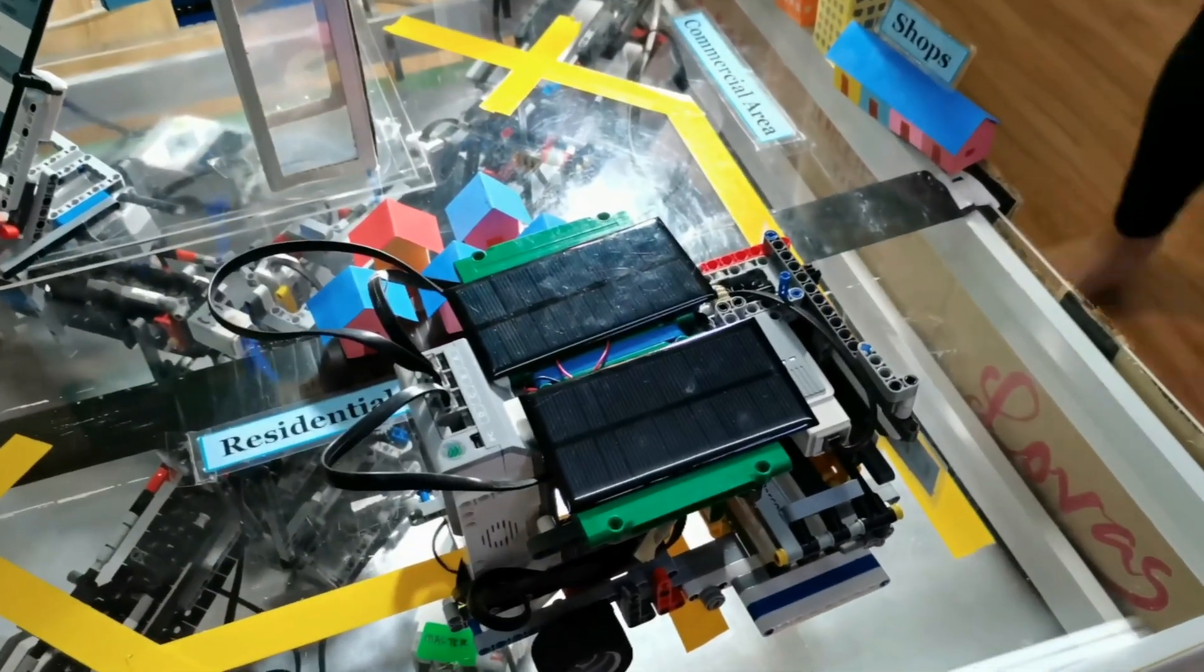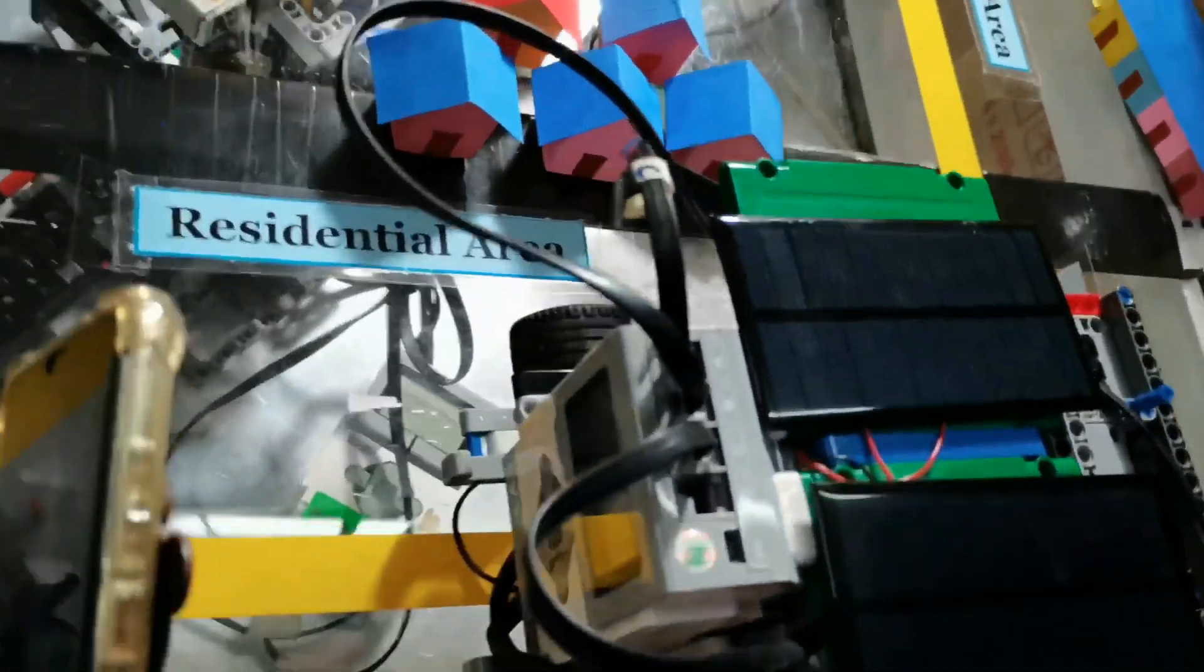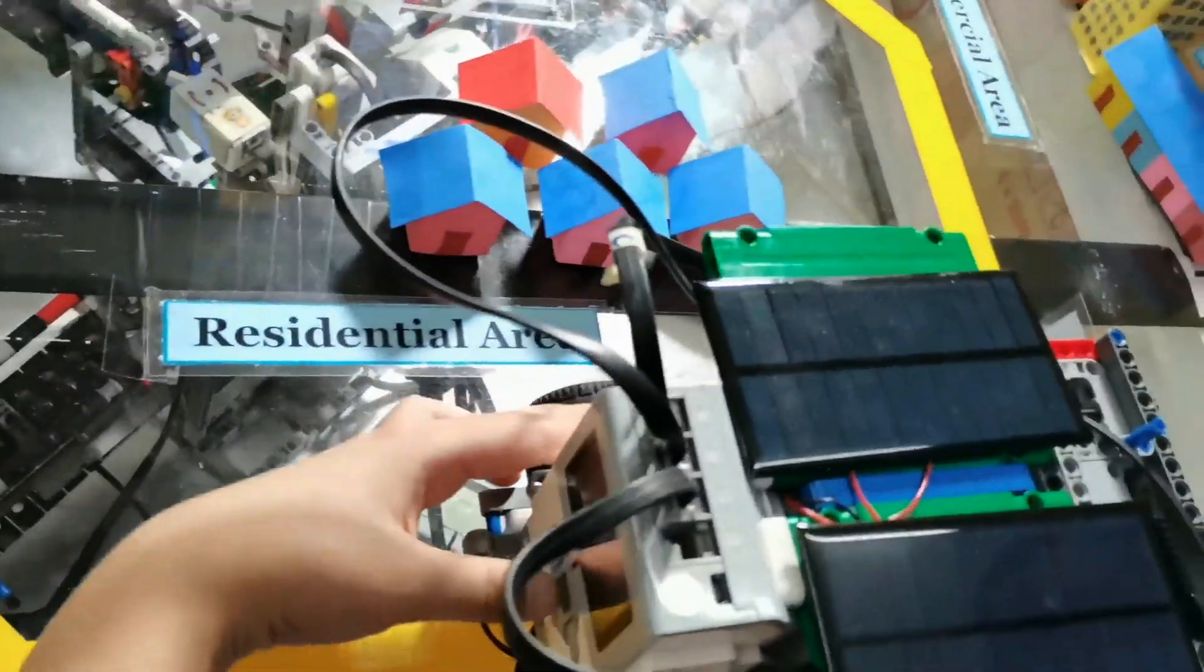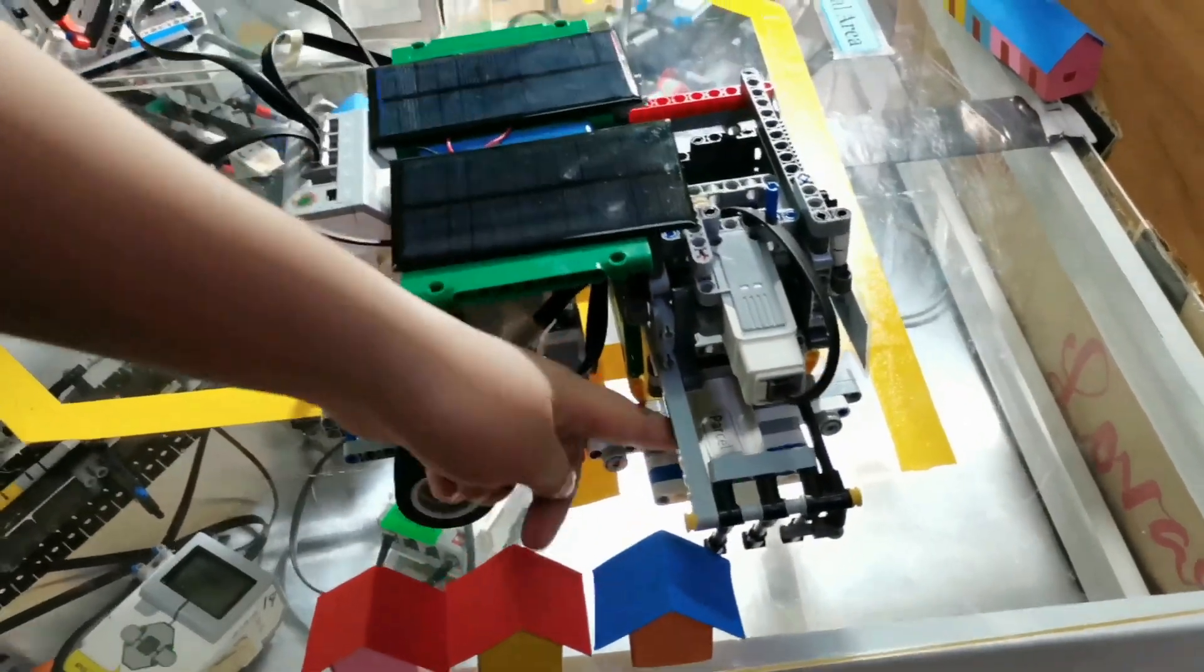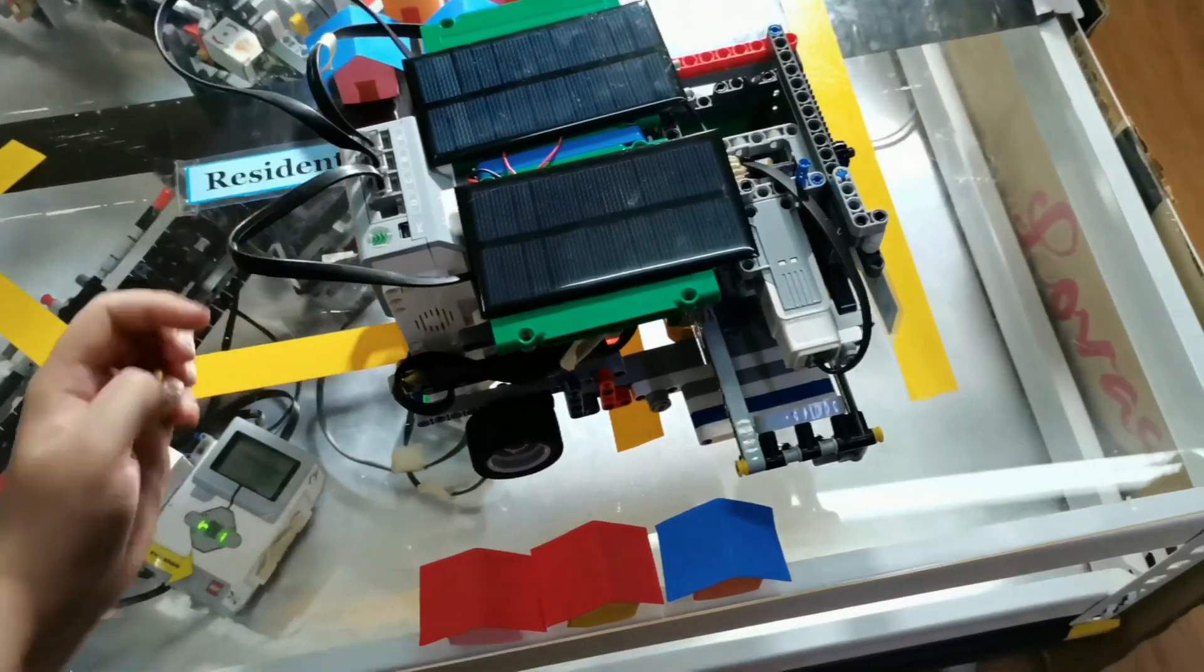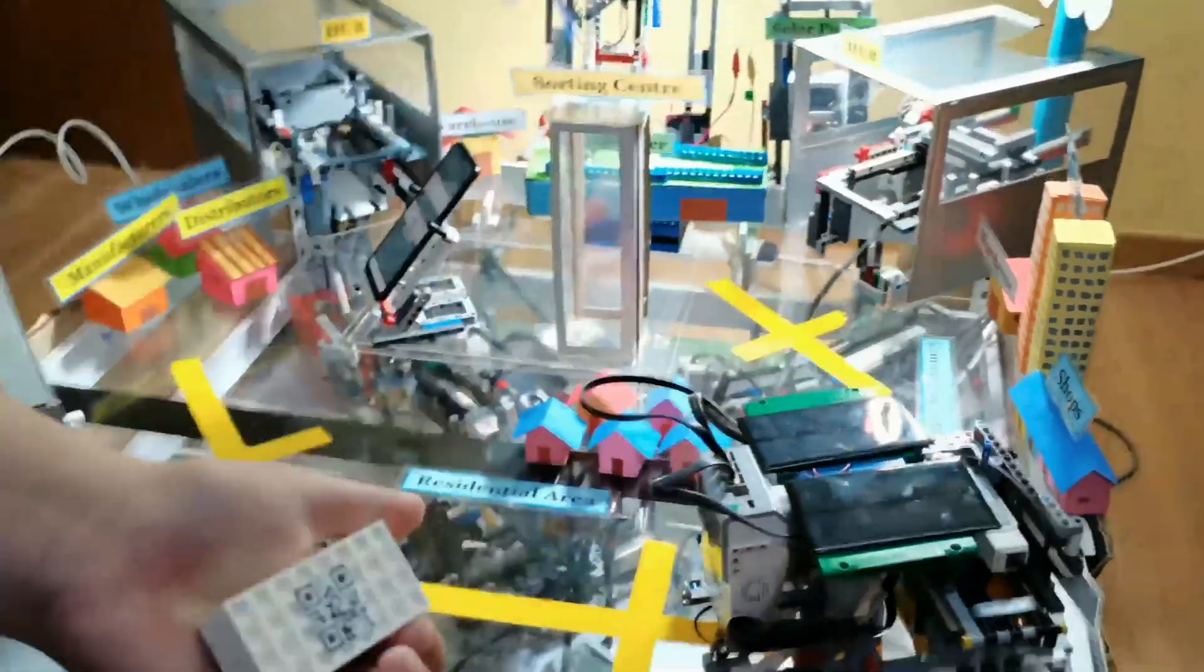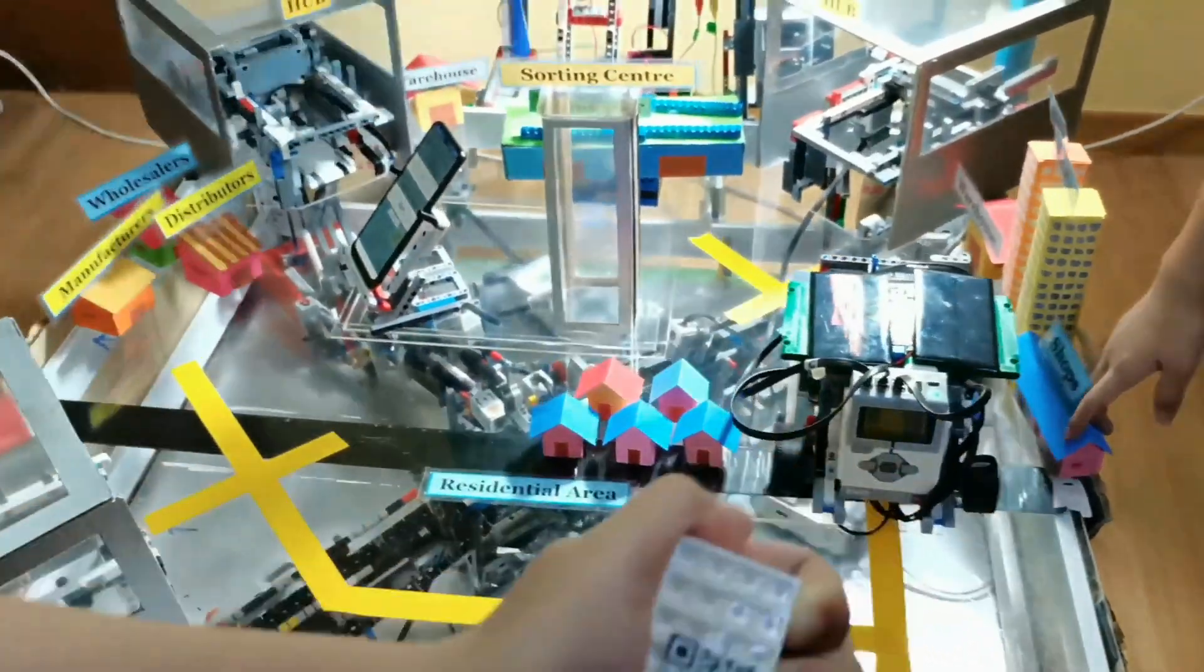People can collect their parcels by scanning the QR code they received earlier. If they are not available to collect it, the parcels will be automatically transferred to the smart locker for them to collect it at other times.